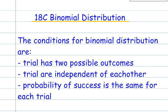There are some conditions for binomial distribution, and they are that the trial has to have only two possible outcomes, that they're independent of each other, and that the probability of success is the same for each trial.